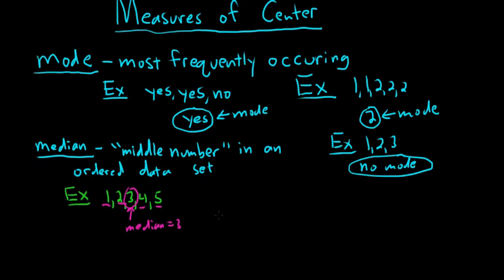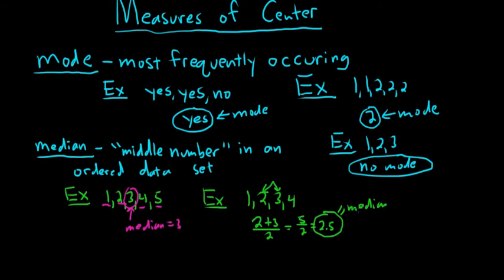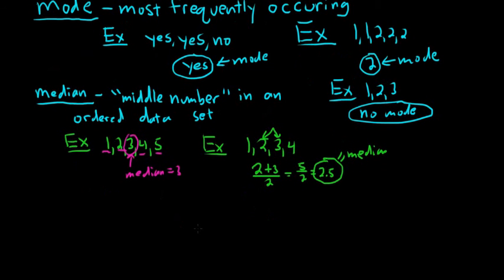However, sometimes you don't have, technically speaking, a middle number. So check this out. Say you had 1, 2, 3, 4. So there is no middle number. So how would you find the median? Well, to find it, what you would do is you would add these up and you would divide by 2. So you would do 2 plus 3 over 2. So you would get 5 over 2. So you would end up with 2.5. So in this case, that would be your median. Fortunately, the software that we'll be using does all this for us. So we don't have to do any computations by hand. I'm just kind of doing this just to show you how, if you wanted to do it by hand, this is how you would do it.